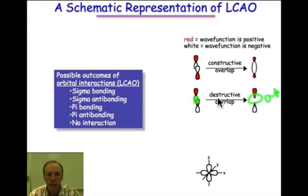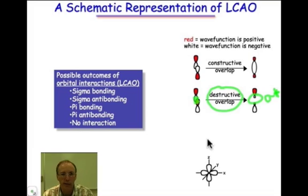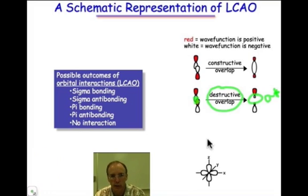There's a net depletion, a subtraction of the wave function in that region. In other words, the wave functions from atom 1 and 2 cancel out each other in that region of space.